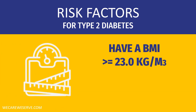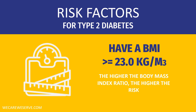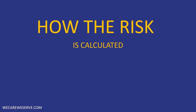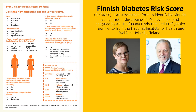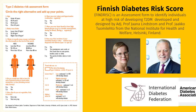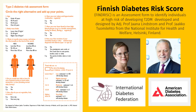Having a high BMI — the higher the body mass index ratio, the higher the risk. The Finnish Diabetes Risk Score is an assessment form used to identify individuals at high risk of developing type 2 diabetes. It was developed by Professor Jana Lindstrom and Professor Yakko from the National Institute for Health and Welfare in Helsinki, Finland, and is currently used by the International Diabetes Federation, the American Diabetes Association, and many others.